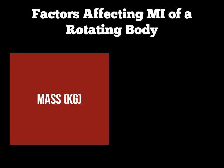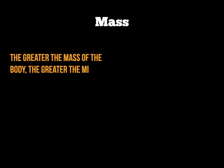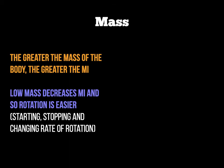When looking at what affects how easy a body rotates, there are two specific factors. First, the weight or mass of the body. The heavier the object, the greater its resistance to angular motion, so the MI of a heavy object is going to be quite high. Conversely, low mass decreases the MI, and therefore rotation is easier.